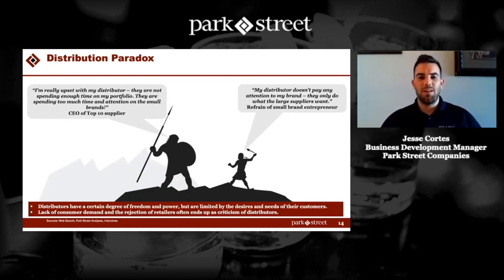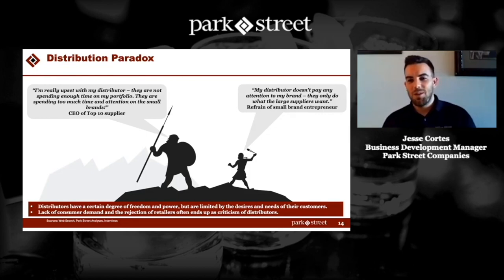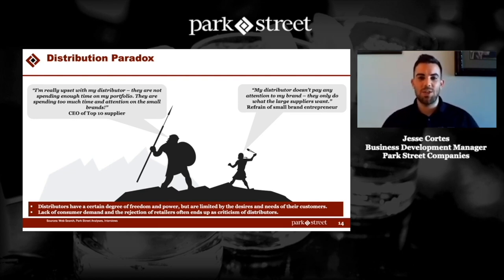The distribution paradox. This is a graphic we put together showing David versus Goliath. David represents the small brand entrepreneur or the small supplier. Goliath is the large guys, the big brands. And we typically see that neither of them can get enough attention from their distributor.